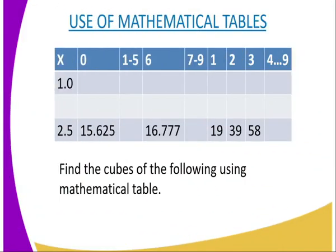Then from there, we can look on another example, use of mathematical table. On the mathematical table, we have three columns. The first column is the X column, and also we have the middle column. The middle columns run from 0 up to 9.